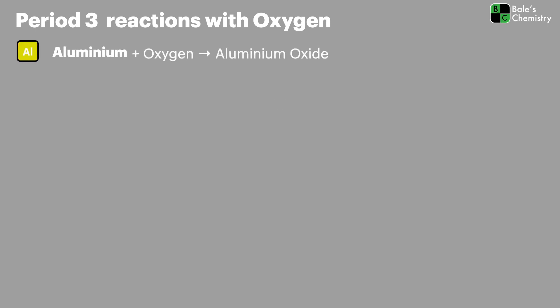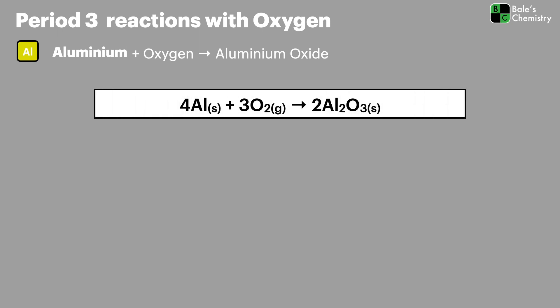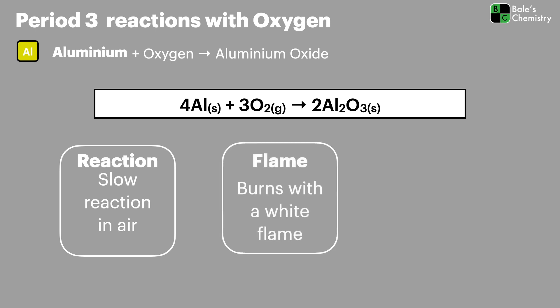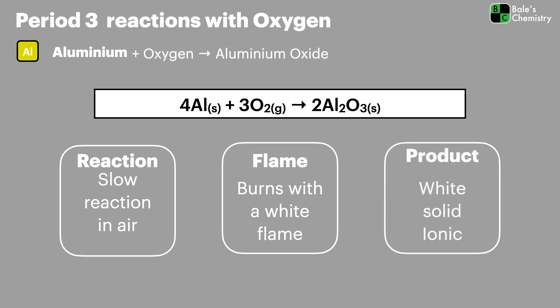The reaction of aluminium with oxygen forms aluminium oxide. It's a slow reaction if left out in air, but speeds up when heated vigorously, burning with a really bright white flame. The product is again a white ionic solid.